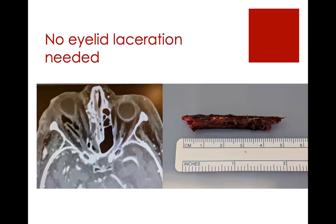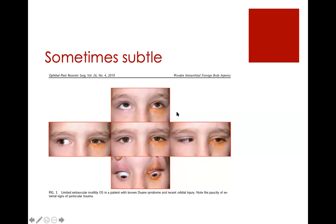Sometimes there's no eyelid laceration and yet a large piece of wood is present — a patient we treated had an unwitnessed fall outside. Her eye was a little red afterwards, and then over days it became more and more proptotic and inflamed. On the outside scan, it was mistaken for a glaucoma shunt. When transferred here, it was clearly a foreign body — it looked like a straw and it was wood, because the density of wood looks like air on a CT. Sometimes things are really subtle with no bruising. You really have to have that high index of suspicion, especially with demented patients or children who can't tell you what happened.